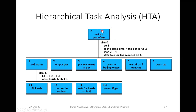In the HTA diagram for making a cup of tea, the main task at the top is 'make a cup of tea.' Plan zero decomposes it into six sub-tasks: boil water, take the empty pot, put tea leaves in pot, pour in boiling water, wait for four to five minutes, and pour the tea. These are sub-tasks 1 through 6.